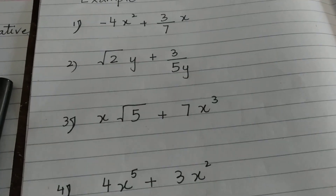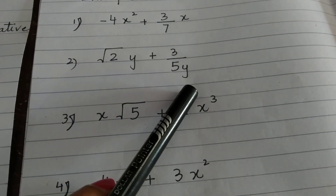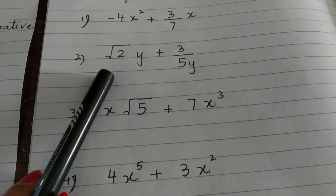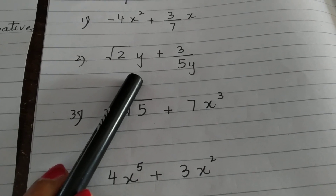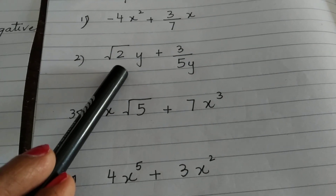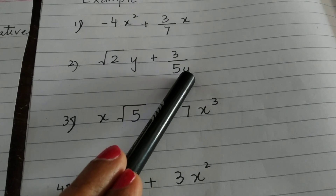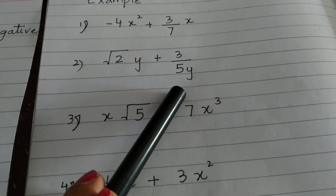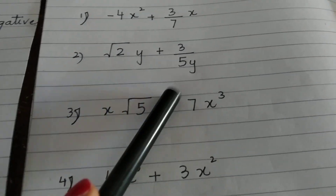The second expression is square root of 2 times y plus 3/(5y). We check the first condition: the exponent on y in the first term is 1, which is positive. But in 3/(5y), if y is shifted from denominator, the exponent becomes minus 1, which is negative. So the first condition is not fulfilled. This is a non-polynomial expression.